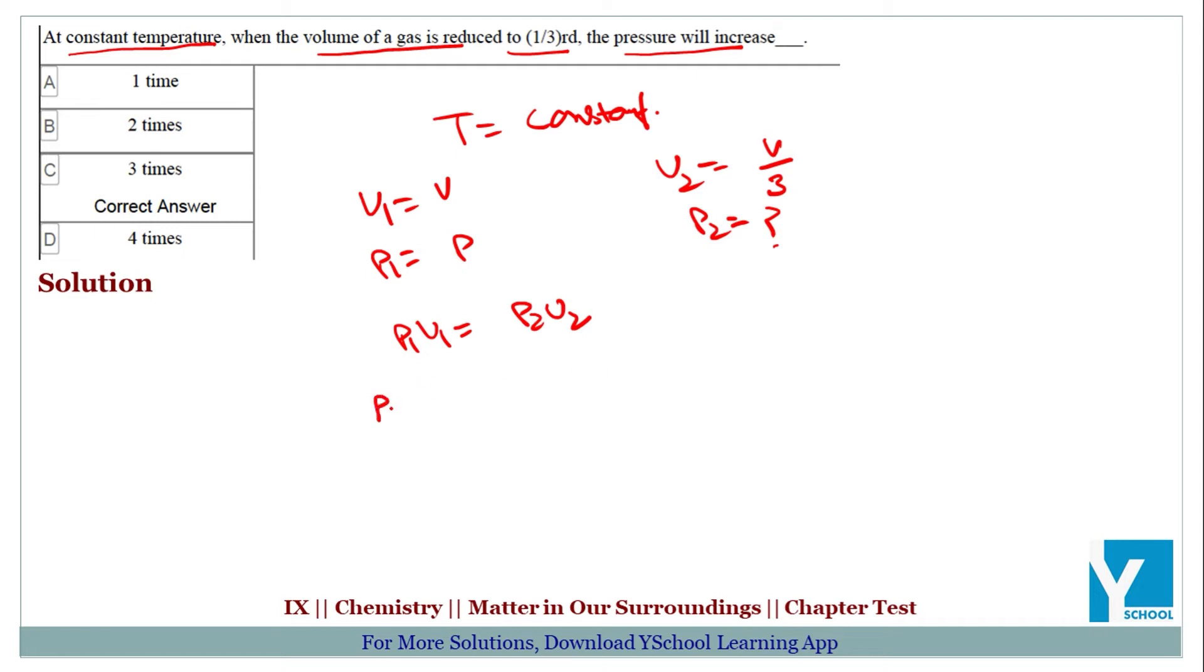P1 is P. V1 is V. P2, hamein find out karna hai. V2 is V/3.